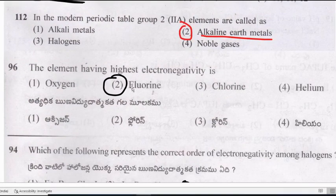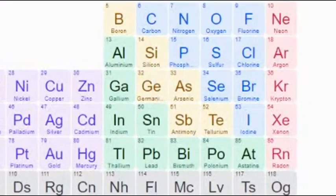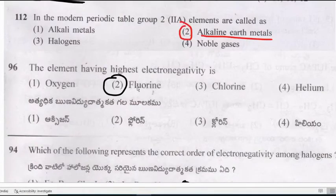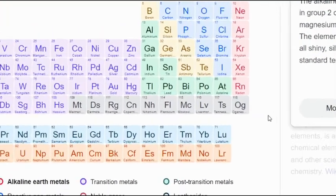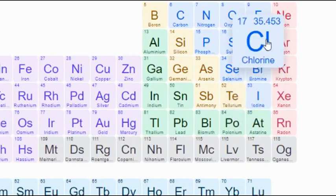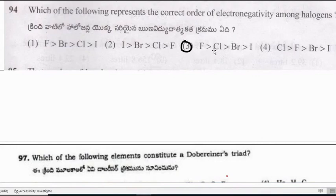Question: The element having the highest electronegativity among oxygen, fluorine, chlorine, and helium. Electronegativity increases from left to right, so fluorine has the highest electronegativity. Question: Which represents the correct order of electronegativity among halogens? Electronegativity decreases from top to bottom, so the order is: F > Cl > Br > I.